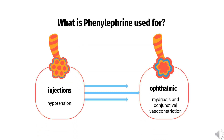Phenylephrine injections are indicated to treat hypotension caused by shock or anesthesia. The ophthalmic formulation is indicated to induce mydriasis and conjunctival vasoconstriction. The intranasal formulation is used to treat congestion, and a topical formulation is used to treat hemorrhoids. Off-label uses include priapism and induction of local vasoconstriction.